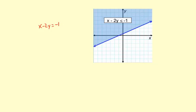So what about all the shaded part? What does that mean? Well, since we're talking less than or equal to negative 1, let's pick a number less than or equal to negative 1. What if we say x minus 2y equals negative 2? What would that look like?